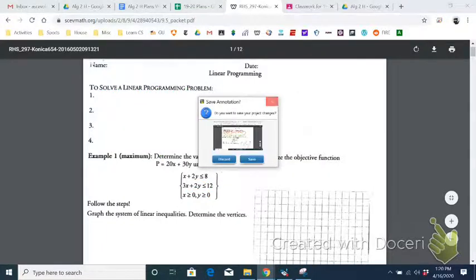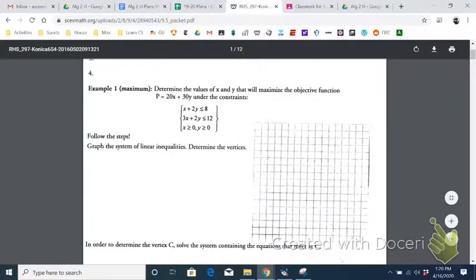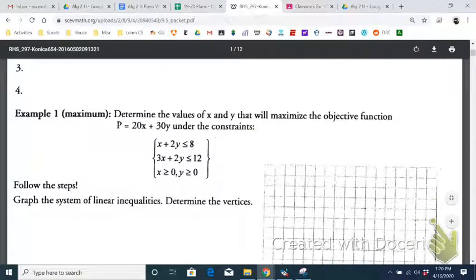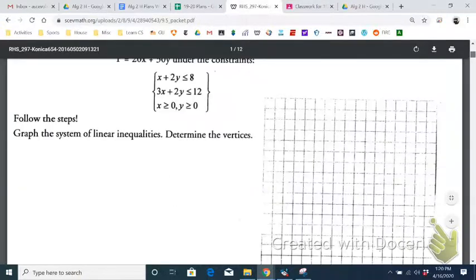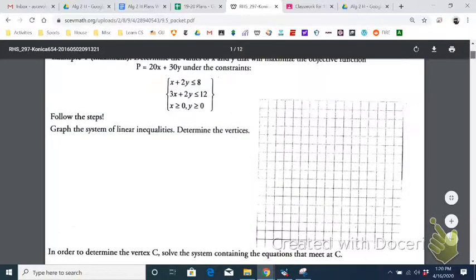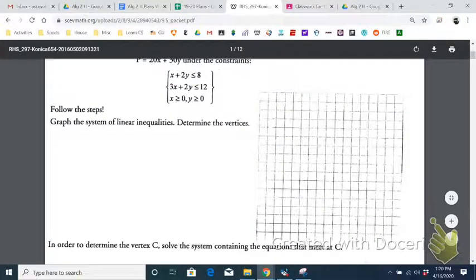So example one, determine the values of x and y that will maximize the objective function. So you're trying to find the value of x and y that make P the largest. But it can't just be any number, or else you just pick like infinity and infinity. They have to satisfy all these constraints. So step one is that we have to graph these inequalities. And to make this video more efficient, I'm just going to pause and do that right now.